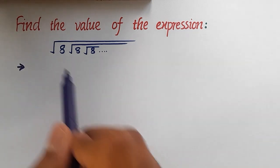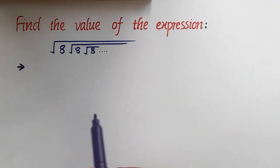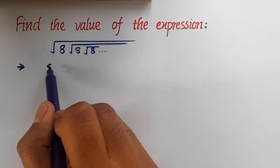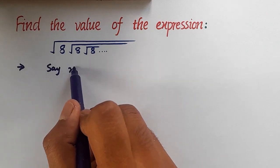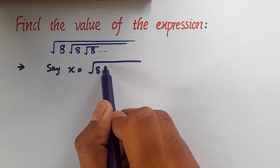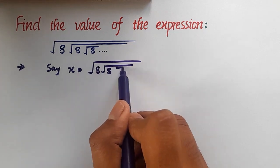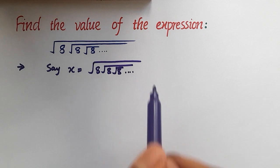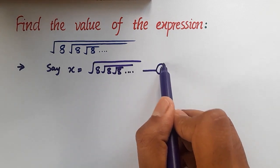Firstly, let us say that this expression is equal to a value x. So x is equal to under root 8, under root 8, under root 8, and so on. Let's say this is equation 1.